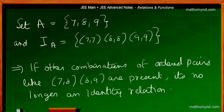So it simply means that the element is pairing up with itself only. So only such cases of a relation can be called an identity relation.